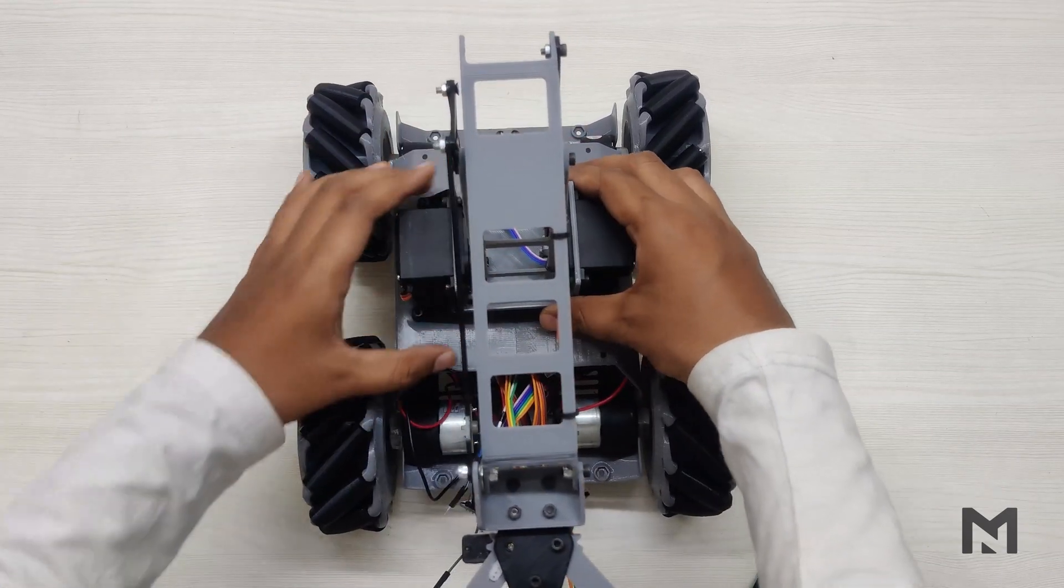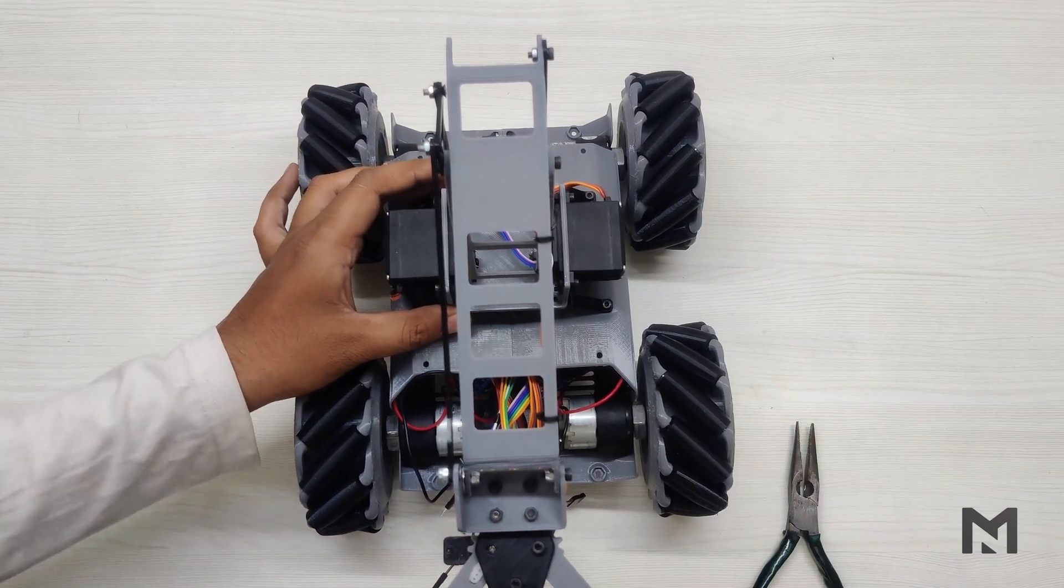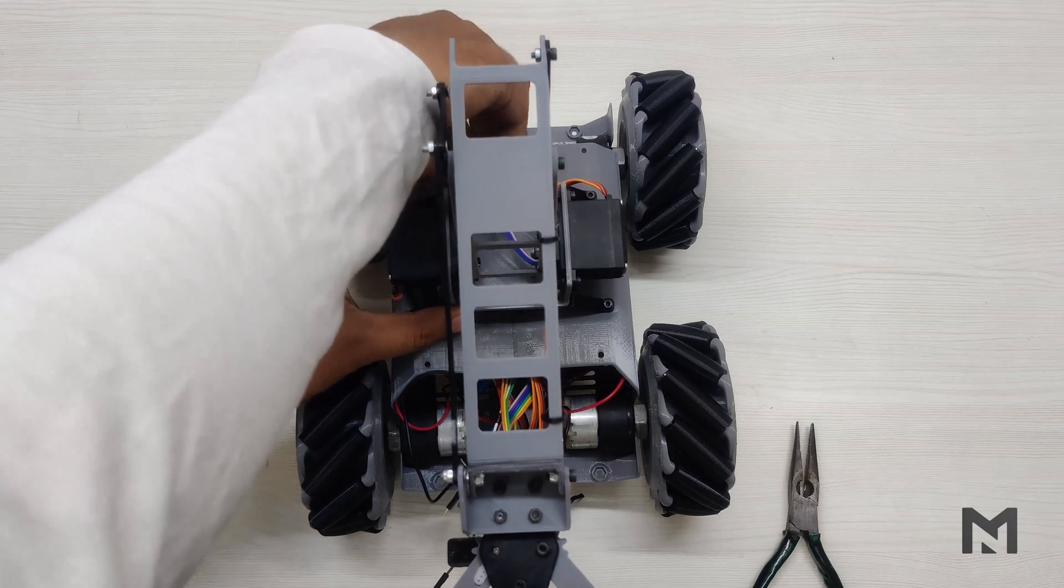Once all the wires are pulled out, match the alignment of the screw holes. Then insert the screw into the holes and tighten it.